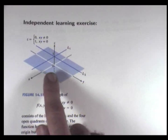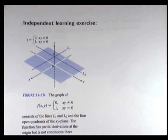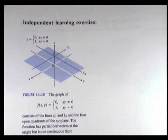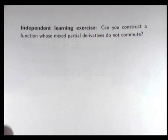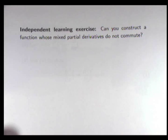For functions of two variables, partial derivatives are a little stranger than what you've seen at school. Here's an example of a function that has a discontinuity at the origin, but the partial derivatives exist at the origin — that's a bit strange. How do you explain that? That's left as an independent learning exercise. Another good exercise is to try to construct a function whose mixed partial derivatives do not commute — in other words, where the mixed partial derivatives are not equal.